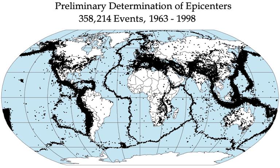It is estimated that around 500,000 earthquakes occur each year detectable with current instrumentation. About 100,000 of these can be felt. Minor earthquakes occur nearly constantly around the world in places like California and Alaska in the U.S., as well as in El Salvador, Mexico, Guatemala, Chile, Peru, Indonesia, Iran, and Pakistan.